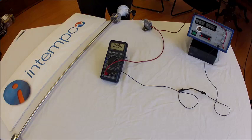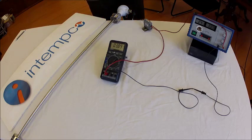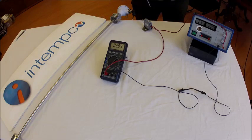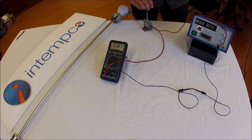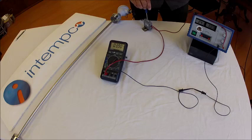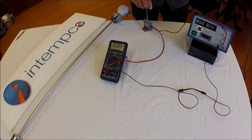In order to adjust the zero point, we use a small flat head screwdriver and adjust the trim potentiometer marked Z on the transmitter until we get 4 milliamps. There we go.